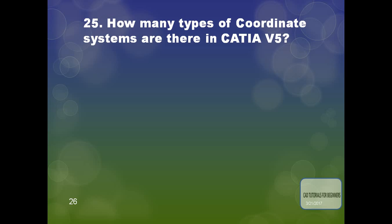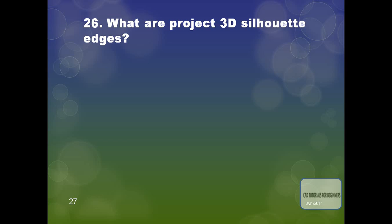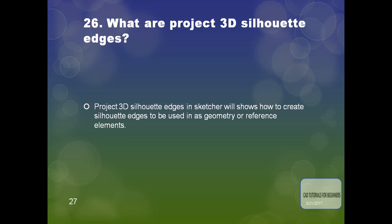The next question is: how many types of coordinate systems are there in CATIA V5? There are three coordinate systems: the Cartesian coordinate system, the polar coordinate system, and the spherical coordinate system.